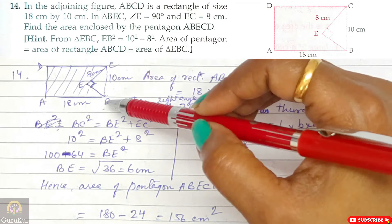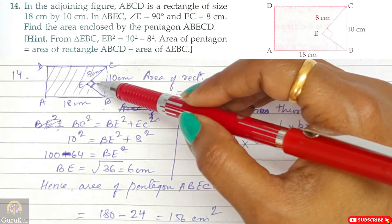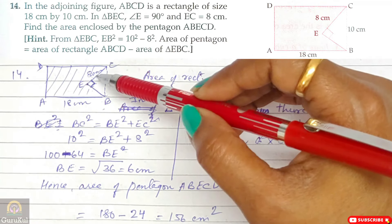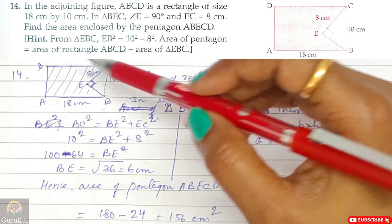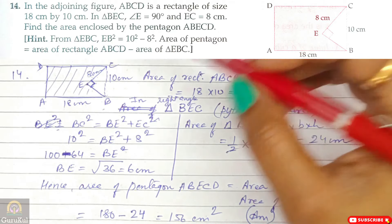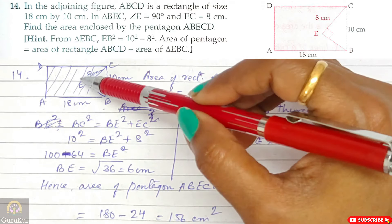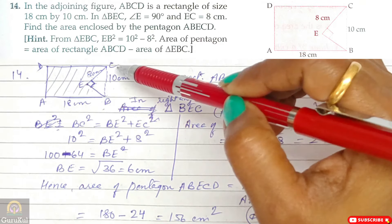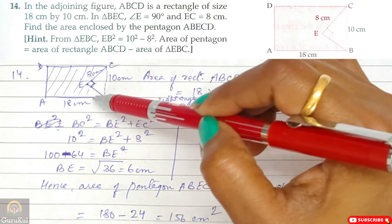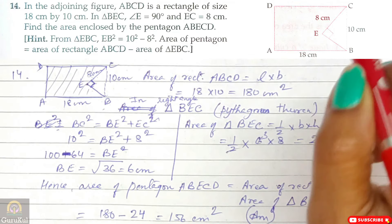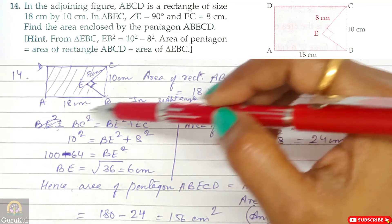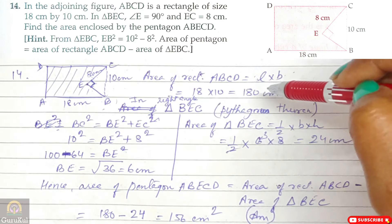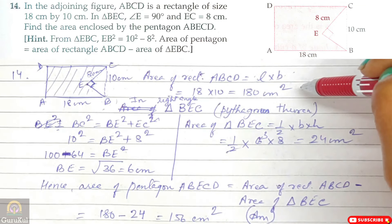Area of rectangle ABCD = length × breadth = 18 × 10 = 180 cm². To find the area of triangle BEC, we first find the missing base BE using Pythagoras theorem in right angle triangle BEC: BC² = BE² + EC², so 10² = BE² + 8², giving BE² = 100 − 64 = 36, hence BE = 6 cm.